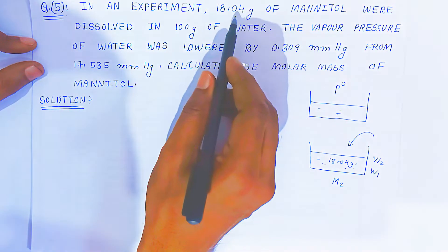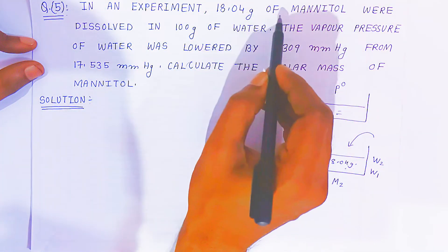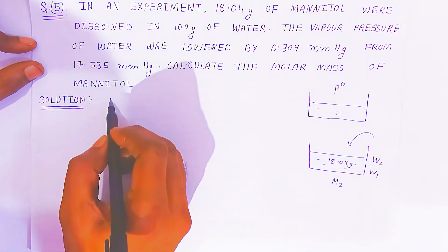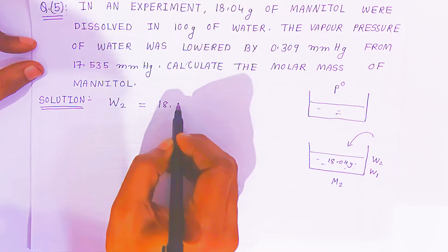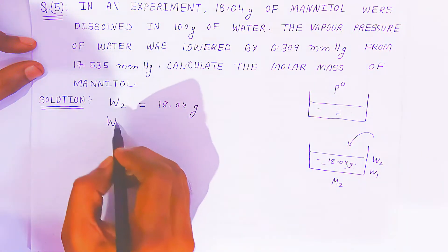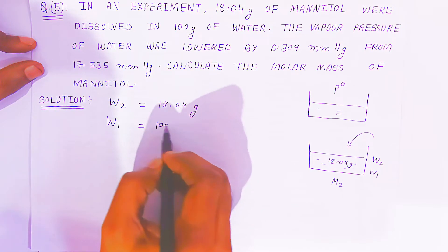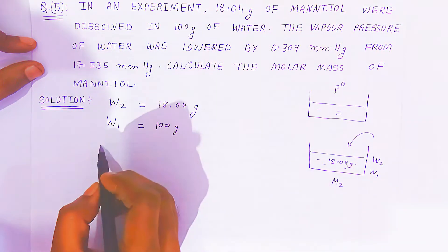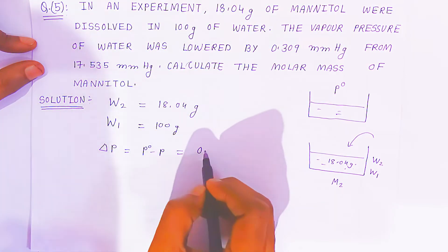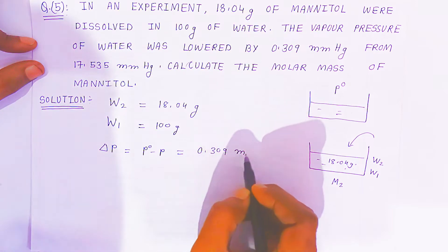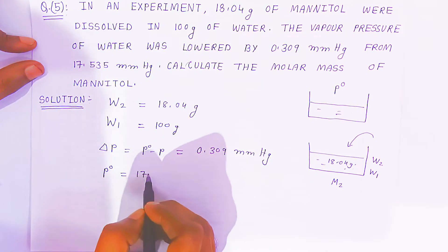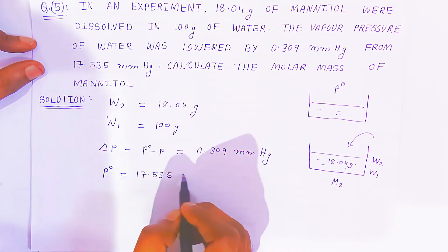Let's write down the given data. The second component stands for mannitol, so W2 = 18.04 gram. It is dissolved in 100 gram of water, so W1 = 100 gram. The vapor pressure was lowered, meaning delta P = P0 minus P = 0.309 mmHg. The vapor pressure of the pure solvent is P0 = 17.535 mmHg. We need to calculate M2.